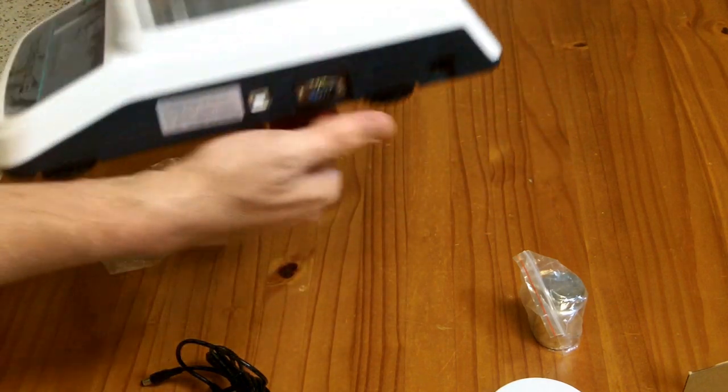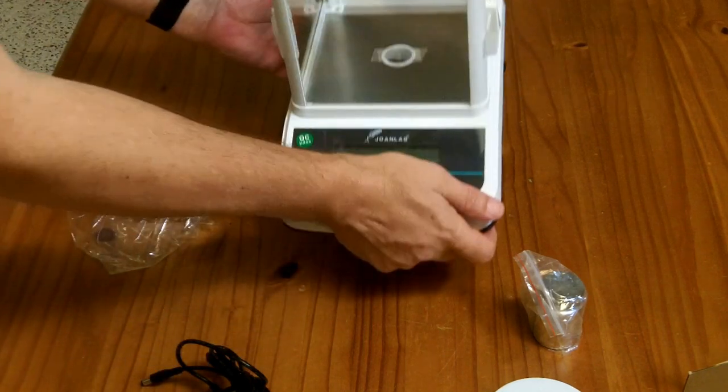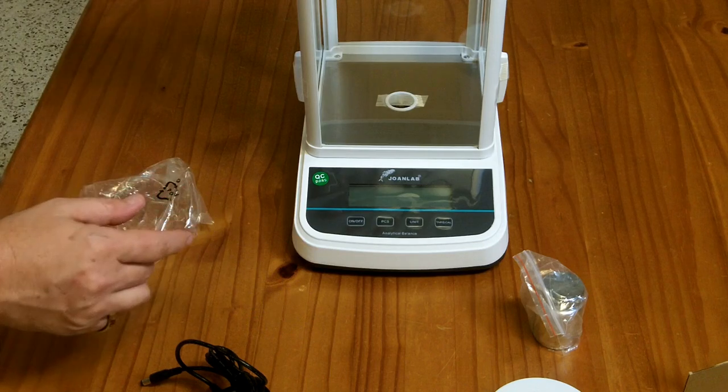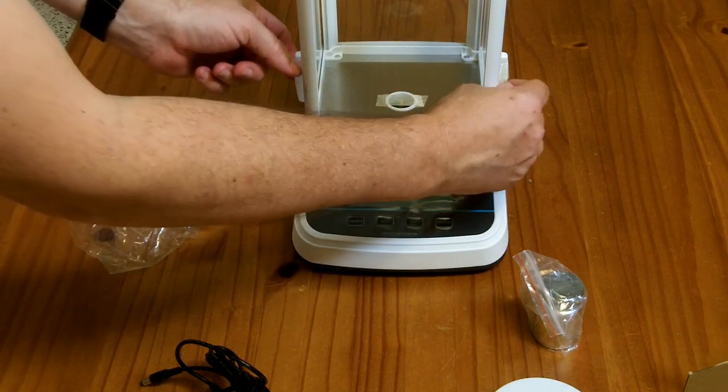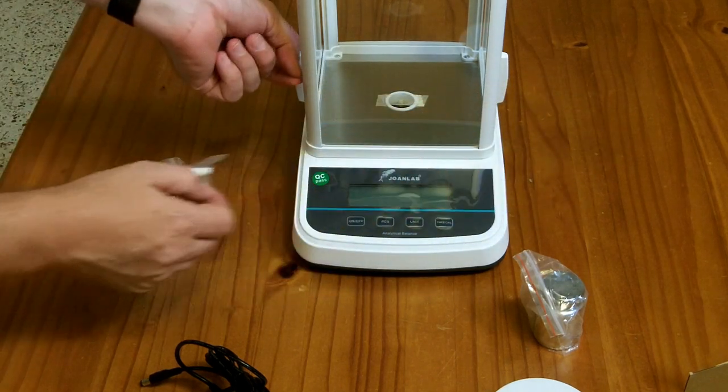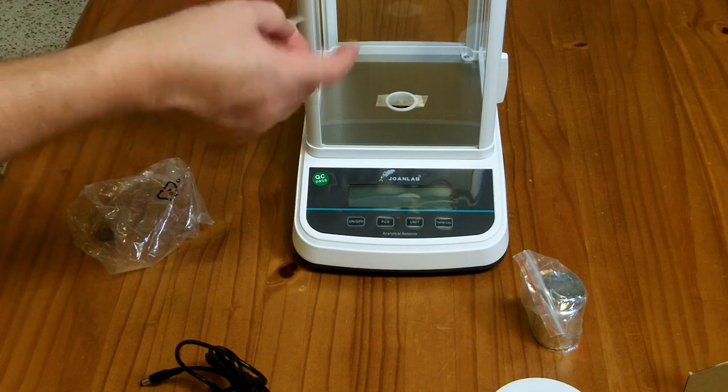You might notice that each of these feet have little knobs on them so you can spin the feet to level the scale. So if your table is not level you may need to level the scale. Now it is an enclosed scale because a little bit of air current can affect this. And it has three sliding windows and they're held closed with this tape for shipping.